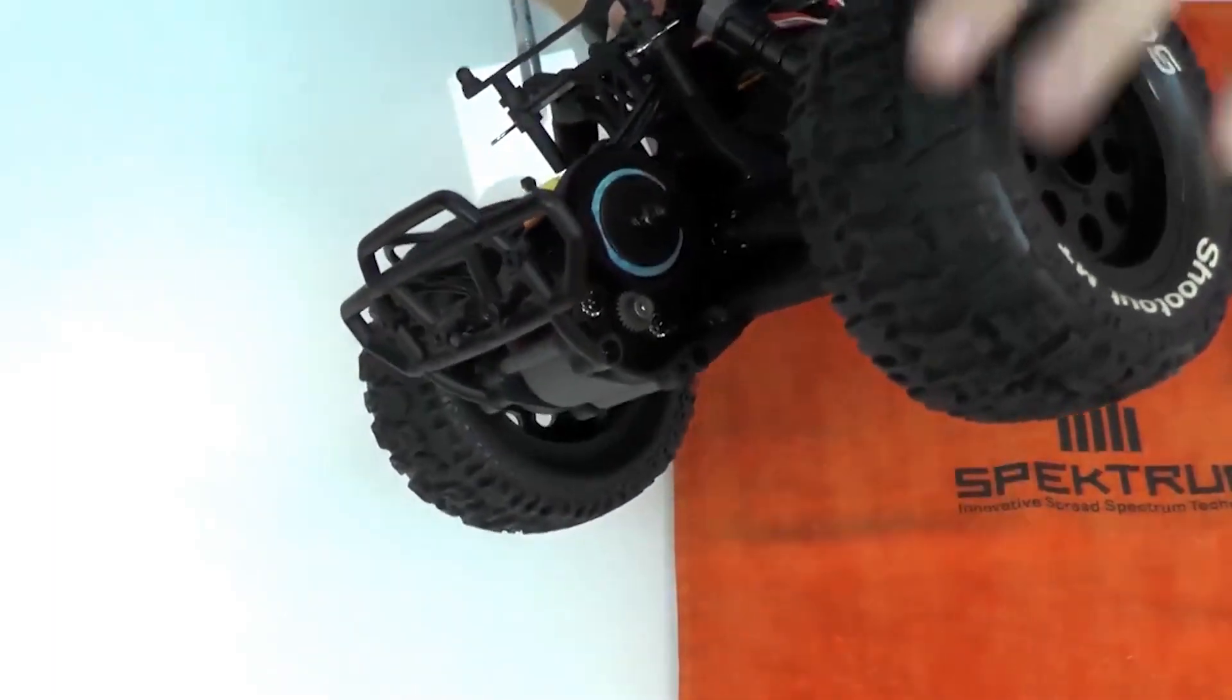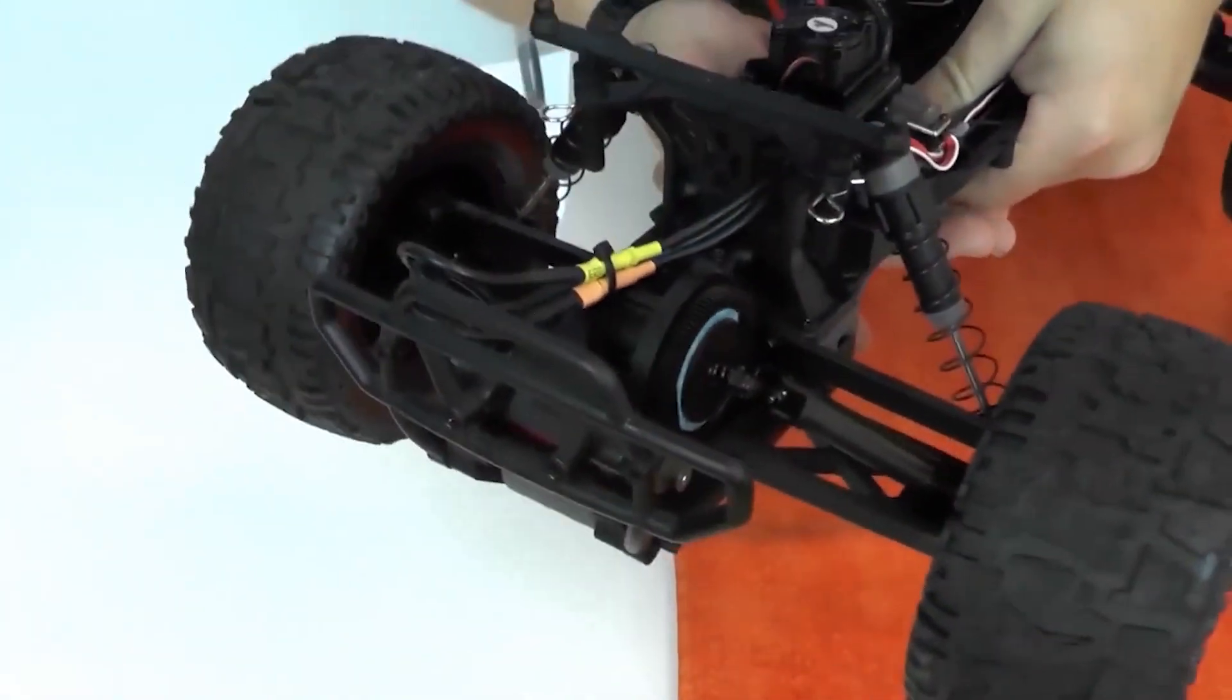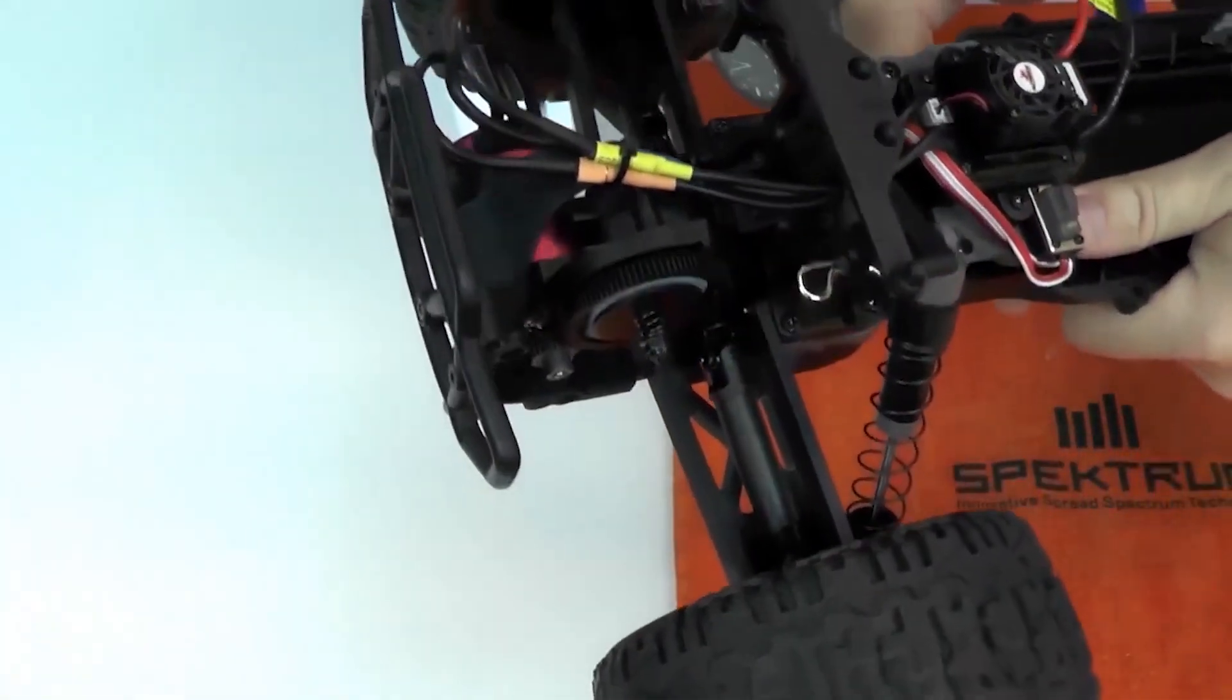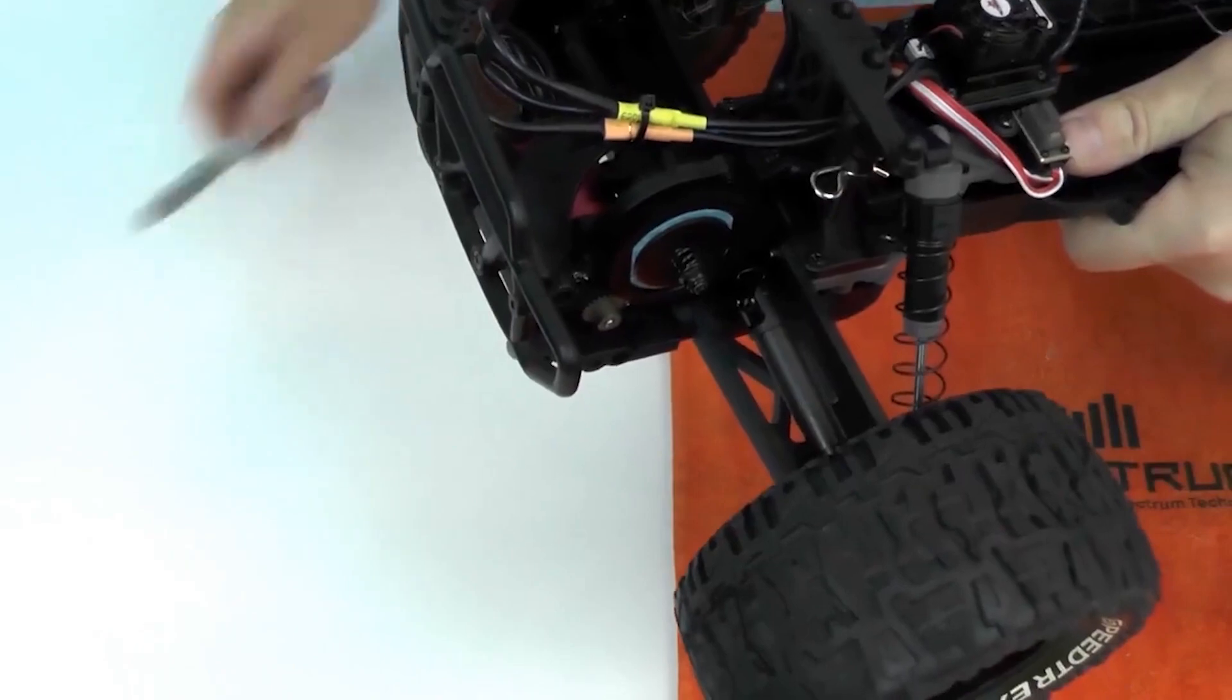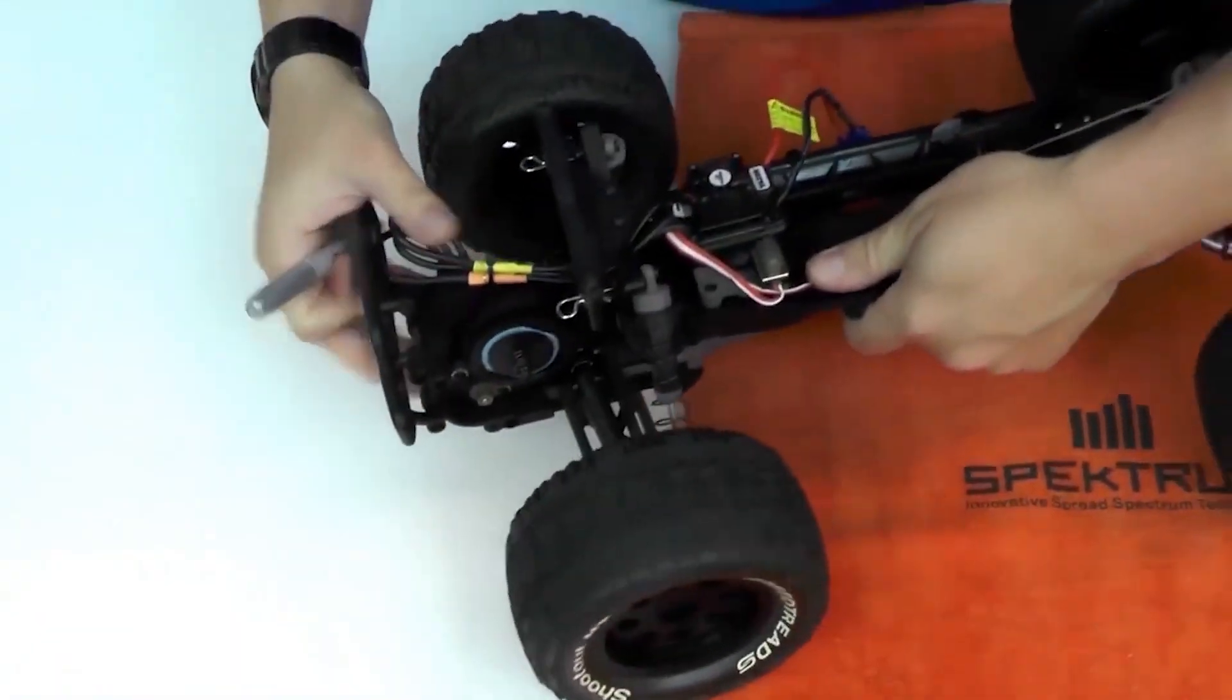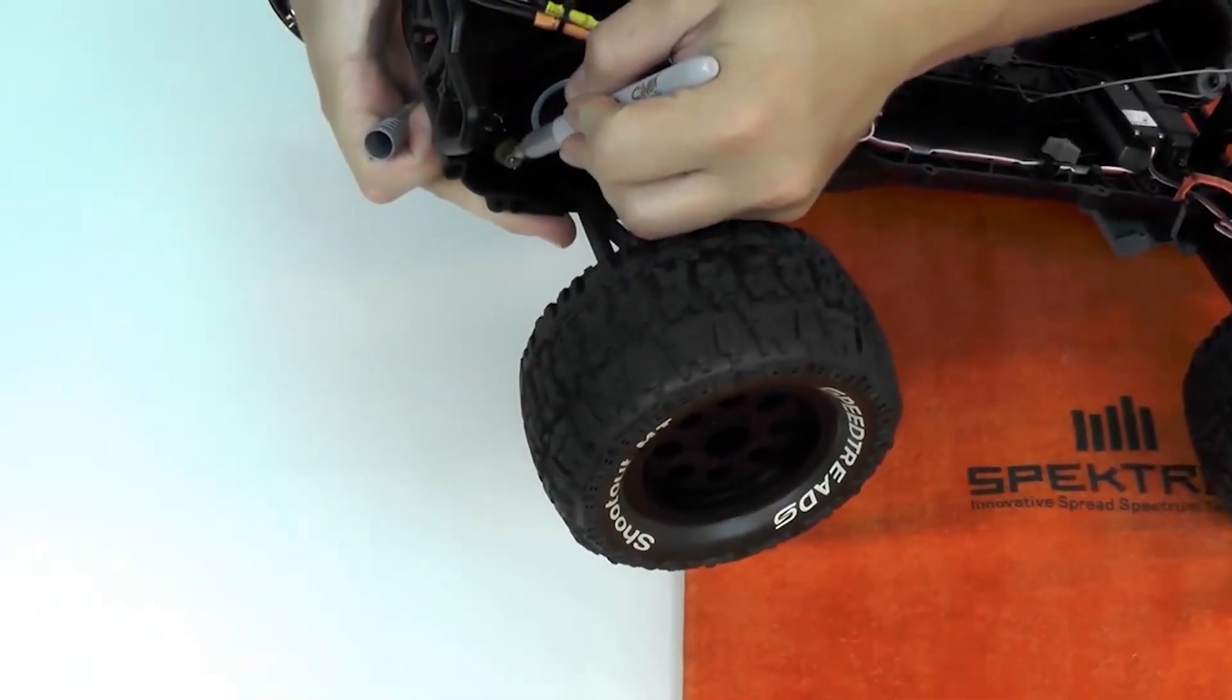First we need to make a mark on the pinion gear. Sometimes you can just use the set screw that's already on top of it, but it makes it more visually appealing if we have a marker and just make a mark on it. It has to be the pinion gear, can't be anything else. So let's go ahead and make a mark.